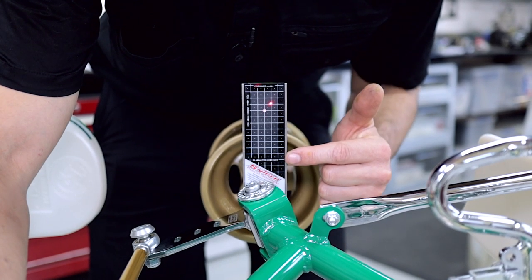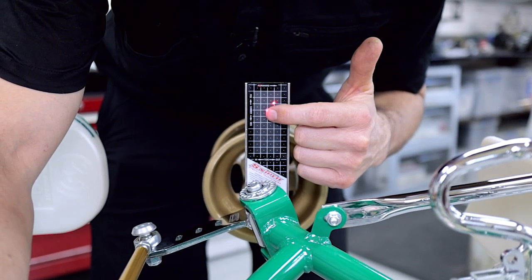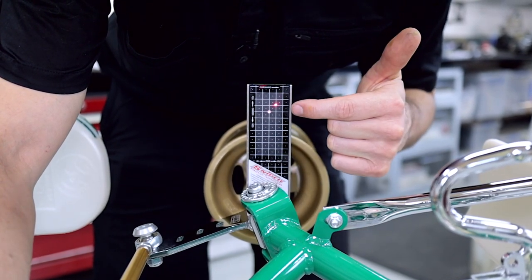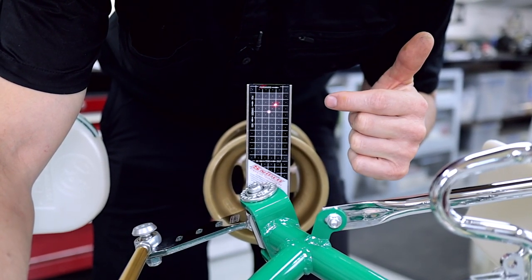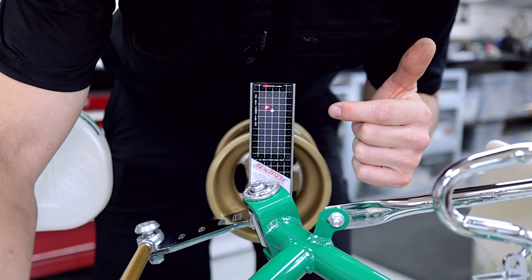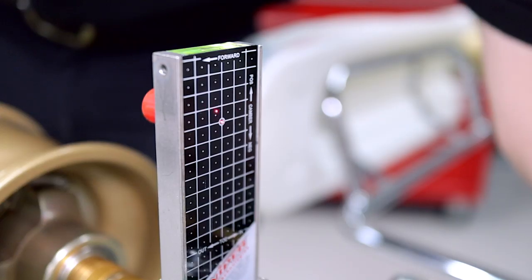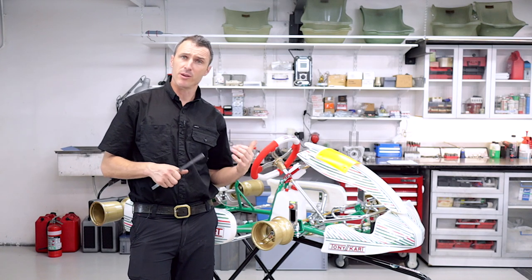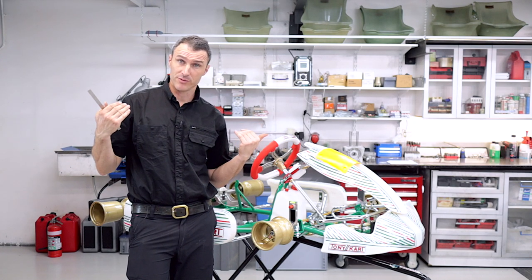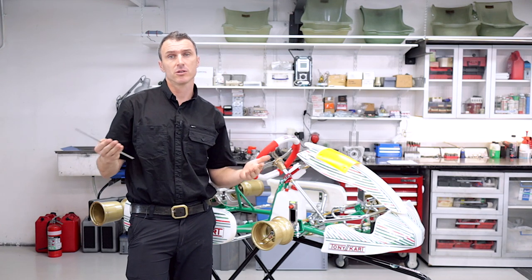So you can see here we've got a little bit of toe out because the laser is in front of the reference line, which is the center there and there. And then to go to toe in, we're just going to adjust the tie rod until we had one millimeter of toe in. And it would be the same for the other side. So in go-karting it's pretty rare that we'd run one millimeter of toe in. Most of the times we're running from neutral to toe out.